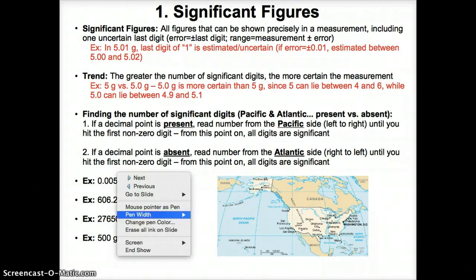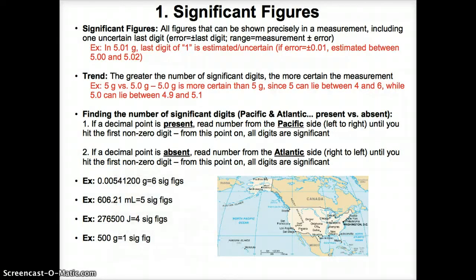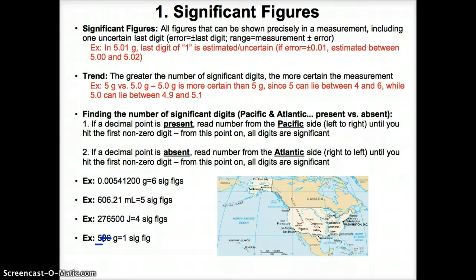Same idea in the fourth and final example. The decimal point is absent, so I read from the Atlantic side — right to left — until I hit the first non-zero digit at 5. From 5 onward, reading backwards to the end, all digits are significant. So I only have 1 significant figure in 500 grams.